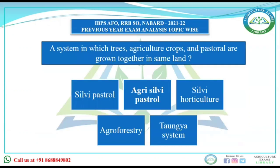The first question is: a system in which trees, agriculture crops, and pasture are grown together in the same place. Before explaining, let us understand the various options. First option is Silvi-pasture, second is Agri-Silvi-pasture, third is Silvi-horticulture, fourth is agroforestry, and fifth is Taungya system. Let's understand one by one.